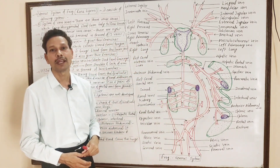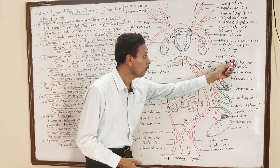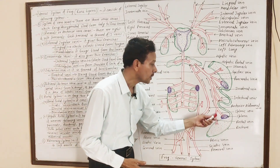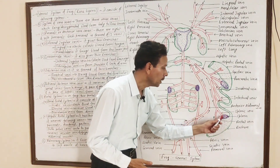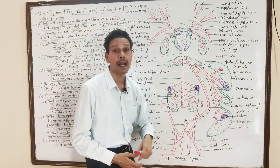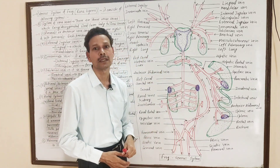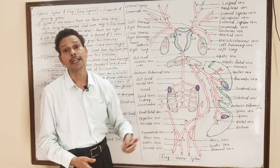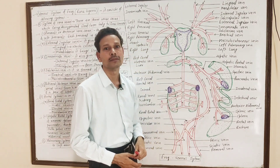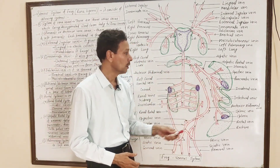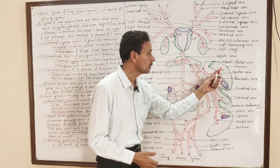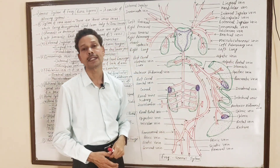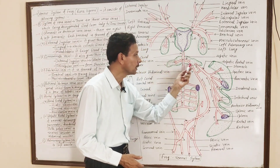The hepatic portal vein brings blood from all over the alimentary canal. From the rectum region, it receives the rectal vein. From the spleen, it receives the splenic vein. From the ileum (small intestine), these are the intestinal or iliac veins. From the duodenum, the duodenal vein. From the pancreas, the pancreatic vein. From the stomach, the gastric veins. All these blood vessels unite and collectively constitute the hepatic portal system — the hepatic portal vein, which opens into the liver.